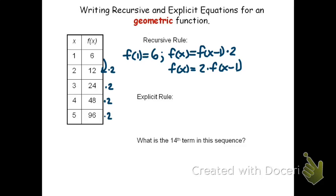Now, understanding that repeated multiplication becomes exponential, we can use that to write the explicit rule. The explicit rule in this case, f of x equals—the beginning f of x term was 6. We saw that we were multiplying by 2 each time, and it becomes exponential.